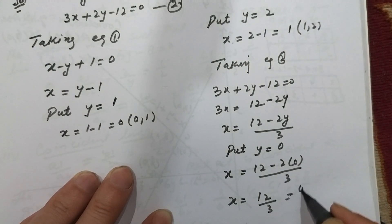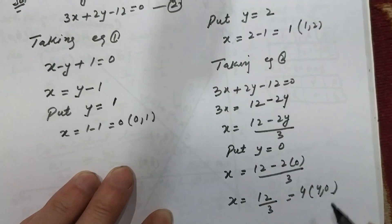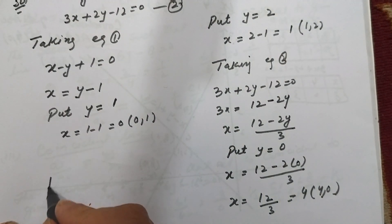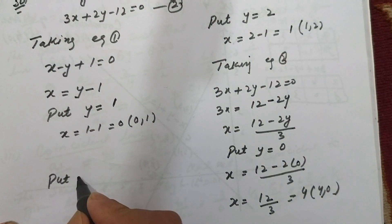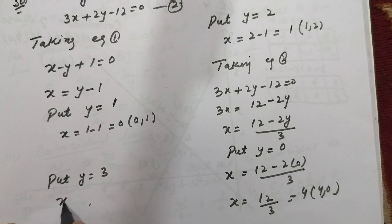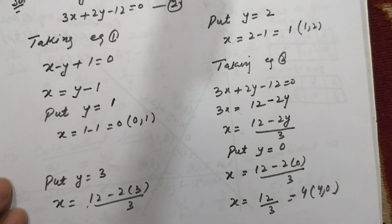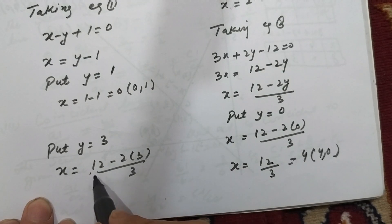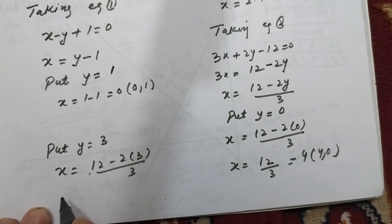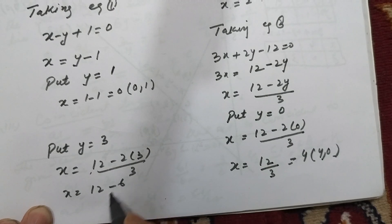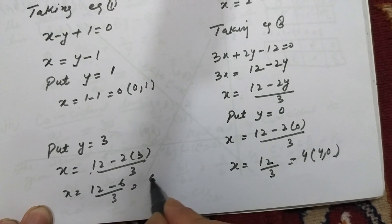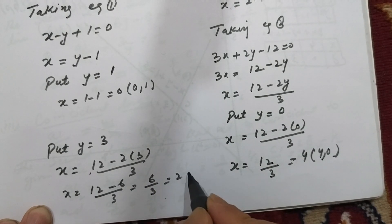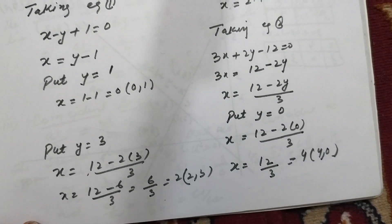Put y equal to 3. X equal to 12 minus 2 into 3 divided by 3. This becomes 12 minus 6 divided by 3, which equals 6 divided by 3, which is equal to 2. So we get 2 comma 3.